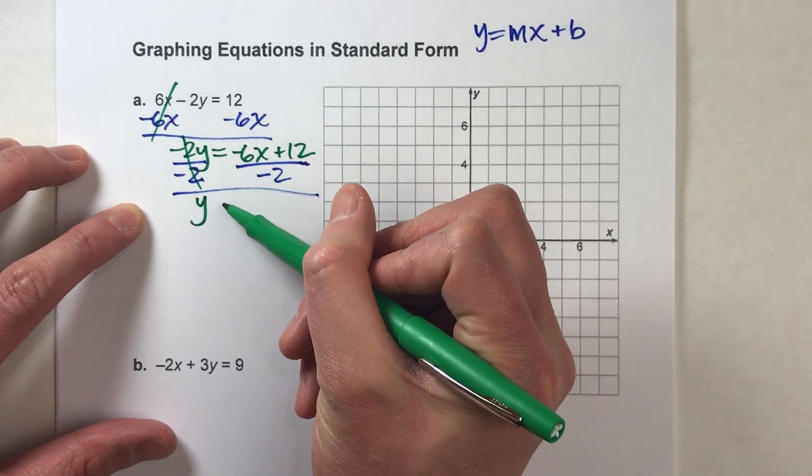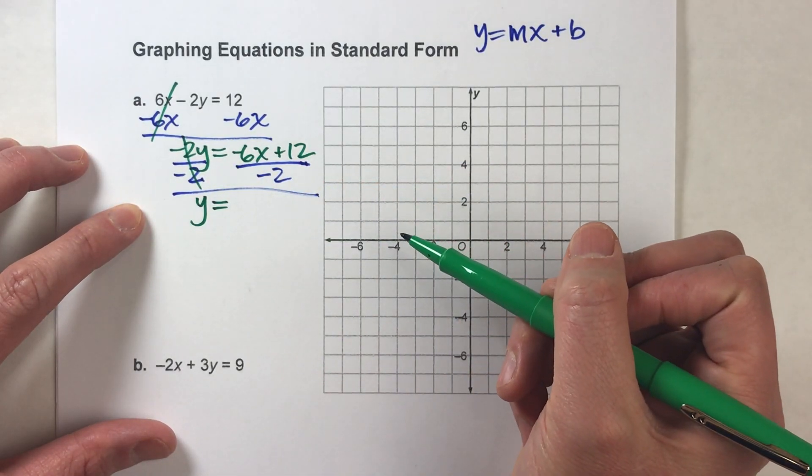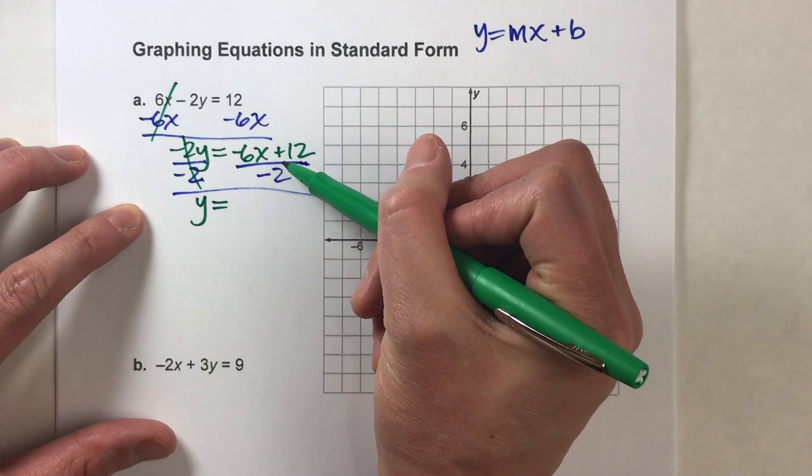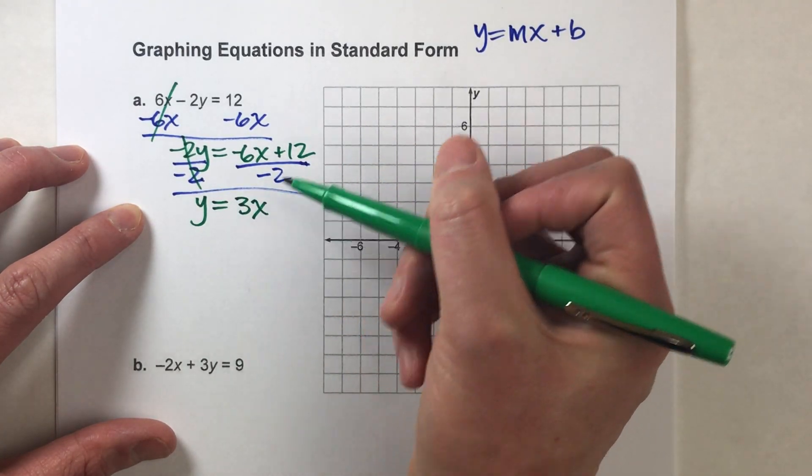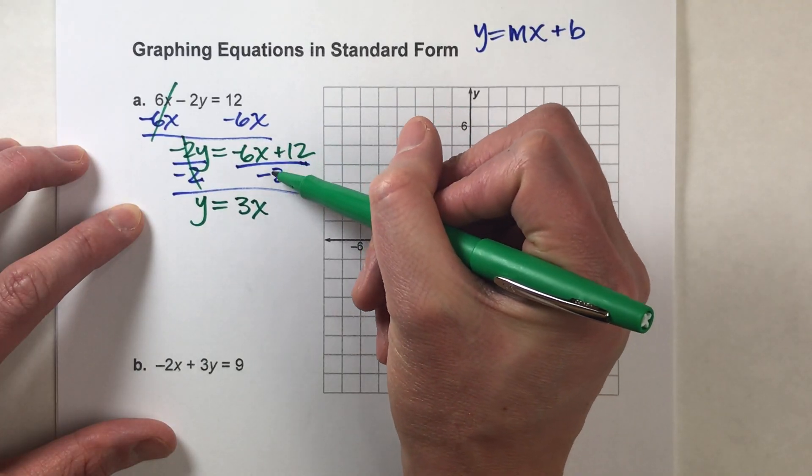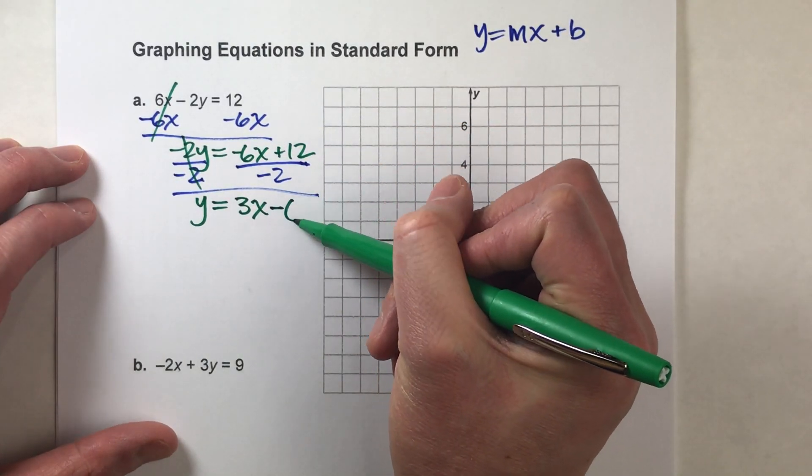And the y drops down, equals drops down. On the other side, negative 6x divided by negative 2 is positive 3x, and positive 12 divided by negative 2 is negative 6.